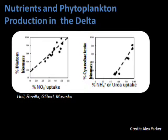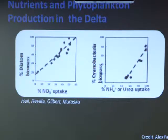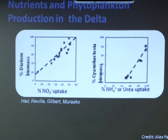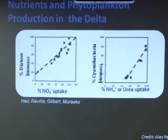Here's some data to support that, also given to me by Alex Parker. Nitrate uptake is very well correlated with diatom biomass, which is one of the good players in the phytoplankton field. Ammonium uptake is correlated with cyanobacteria biomass, which are some of the bad players — some of the harmful algal bloom organisms are taxonomically cyanobacteria.